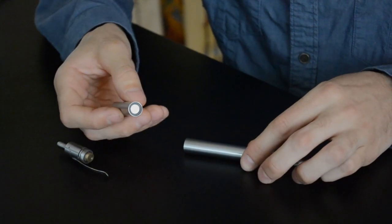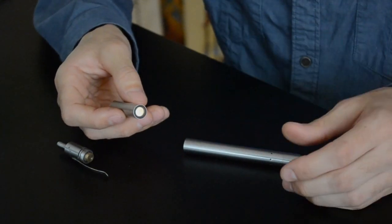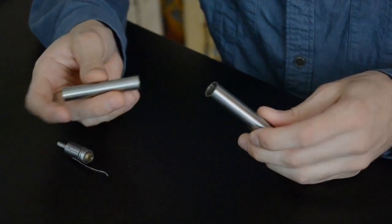There's an indentation on one end, so you can't put it in backwards. To replace the battery, you just slide it back in.